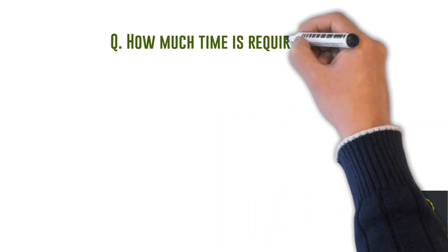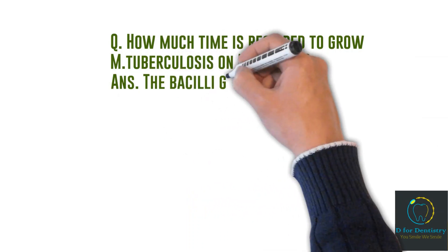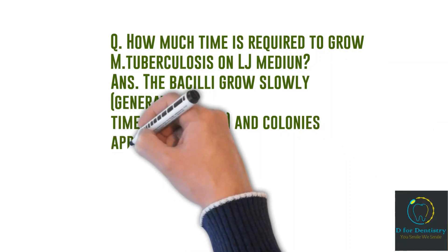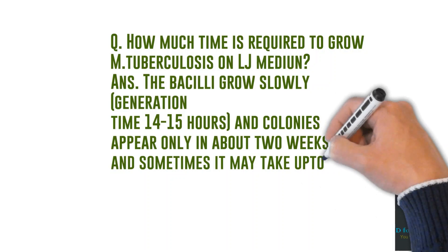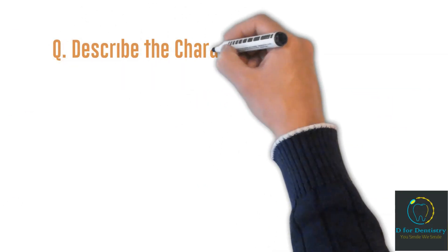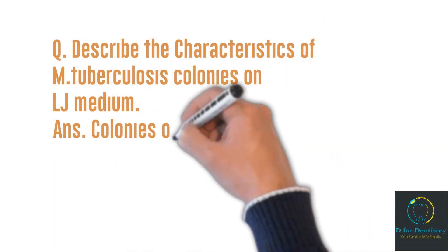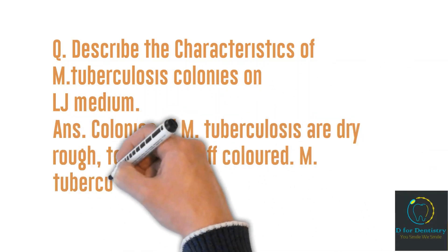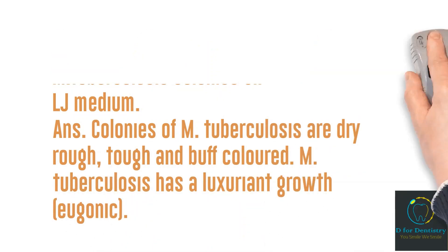Question: How much time is required to grow Mycobacterium tuberculosis on LJ medium? Answer: The bacilli grow slowly — generation time is 14 to 15 hours, and colonies appear only in about 2 weeks; sometimes it may take up to 6 to 8 weeks. Question: Describe the characteristics of M. tuberculosis colonies on LJ medium. Answer: Colonies are dry, rough, tough, and buff colored. Mycobacterium tuberculosis has a luxuriant growth, i.e., eugonic growth.